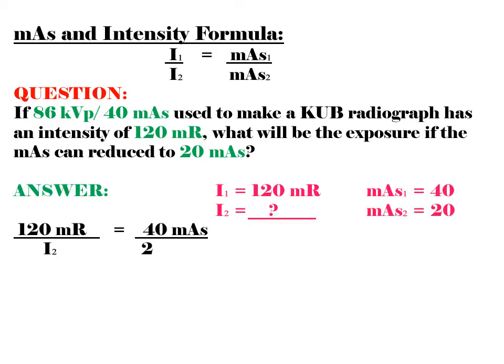Answer: We have intensity 1, which is 120 mR. Intensity 2 is unknown. mAs1 equals 40, mAs2 equals 20.